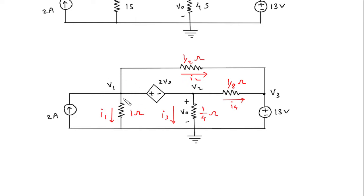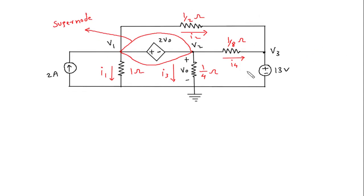Now as we can see this V1 and V2, these two Vo forms a supernode. This is a supernode. So first we will apply KCL to supernode.